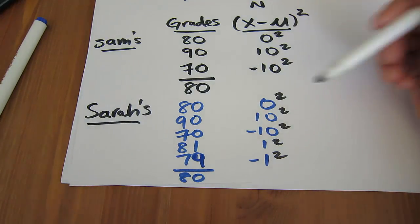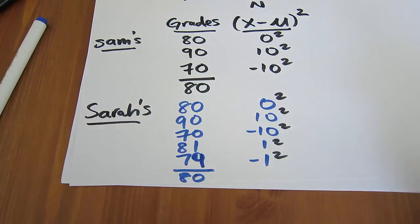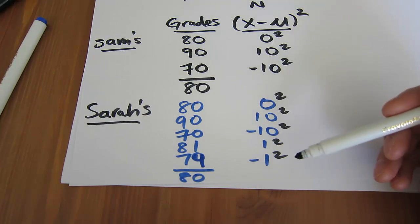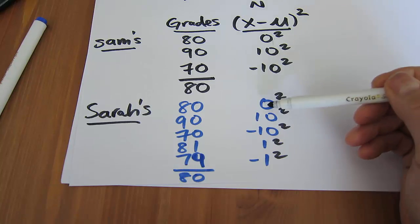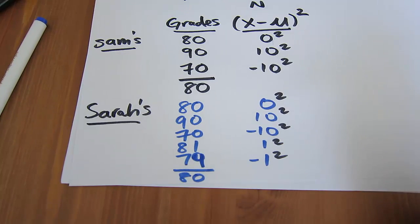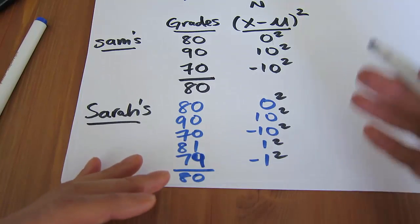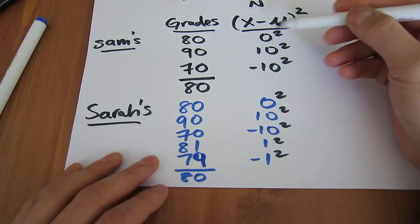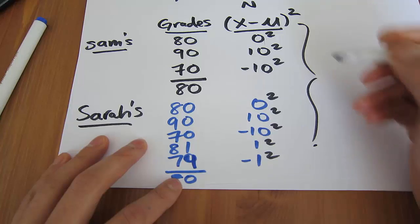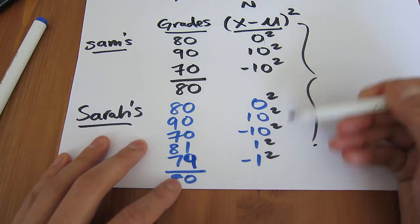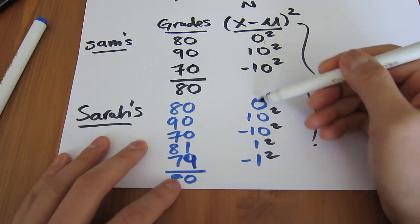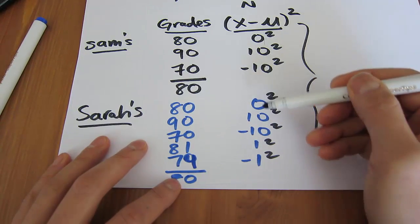And then we sum them up to see which class has more spread, which classroom has more spread in their grades. But it's also not fair if we sum them up and compare them, because Sam only has three terms to sum up, Sarah has five terms to sum up. So how can we overcome this? Well, we can overcome this by taking the average. We take the average deviation here. Because if we sum them up, it's not fair. There's only three terms here and there are five terms here.